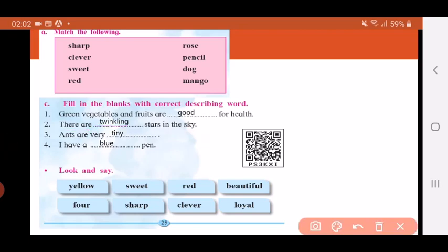Third one: Ants are very dash. Ants are very tiny. Tiny means small.